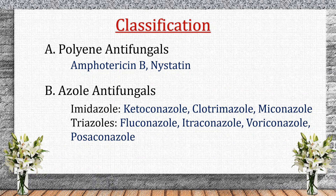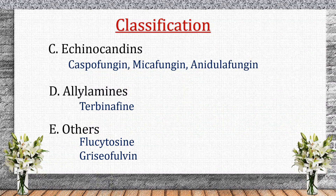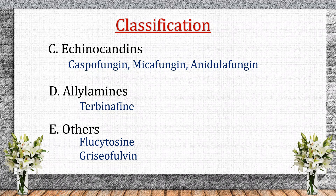The main classes include: polyene antifungals — amphotericin B and nystatin; azole antifungals — imidazoles such as ketoconazole and clotrimazole, and triazoles such as fluconazole, itraconazole, and voriconazole; echinocandins — caspofungin, micafungin, and anidulafungin; allylamines — terbinafine, naftifine, and butenafine; and others including flucytosine and griseofulvin. Each class has a unique target and clinical application.